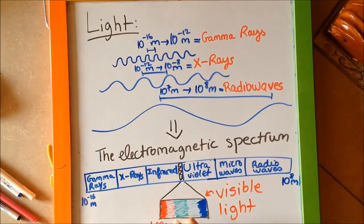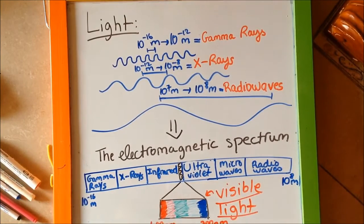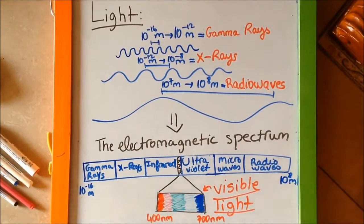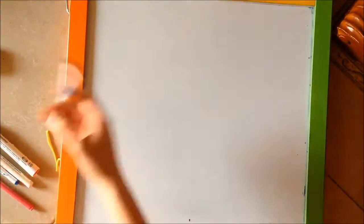It goes from red to violet. This is called visible light. Let's move on now to the process of seeing colors.